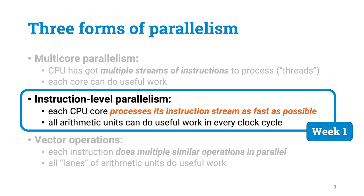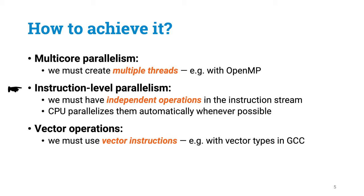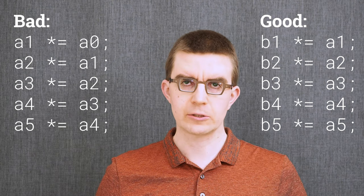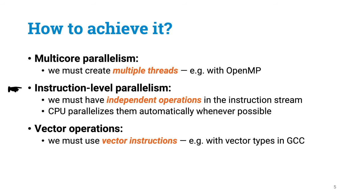Last week we learned to use instruction-level parallelism. This week we will learn about the other two forms of parallelism. In a sense, instruction-level parallelism was the easiest form of parallelism for us to use — we just arrange our code so that there are independent operations that can be executed simultaneously in parallel, and then the CPU parallelized it for us on the fly.